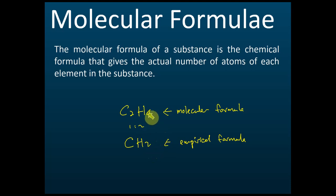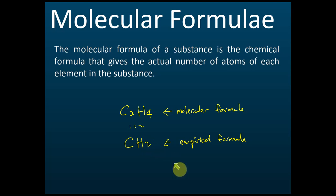We actually want the molecular formula, but before that we must find the empirical formula first. That is the significance of the empirical formula. Those are the two types of chemical formula you need to know: empirical formula and molecular formula.